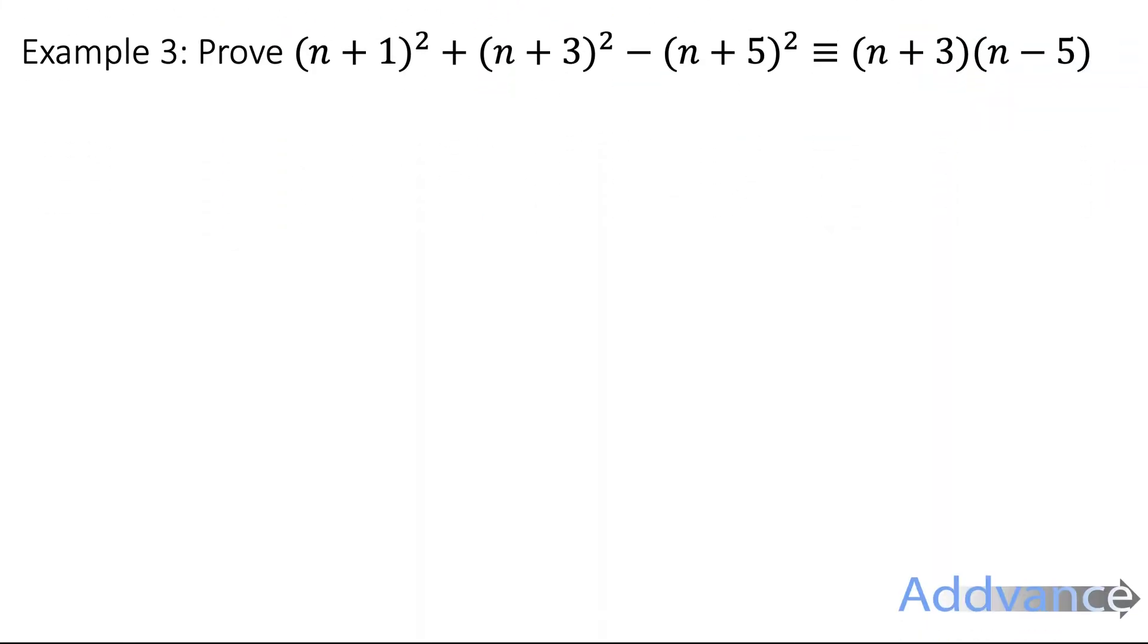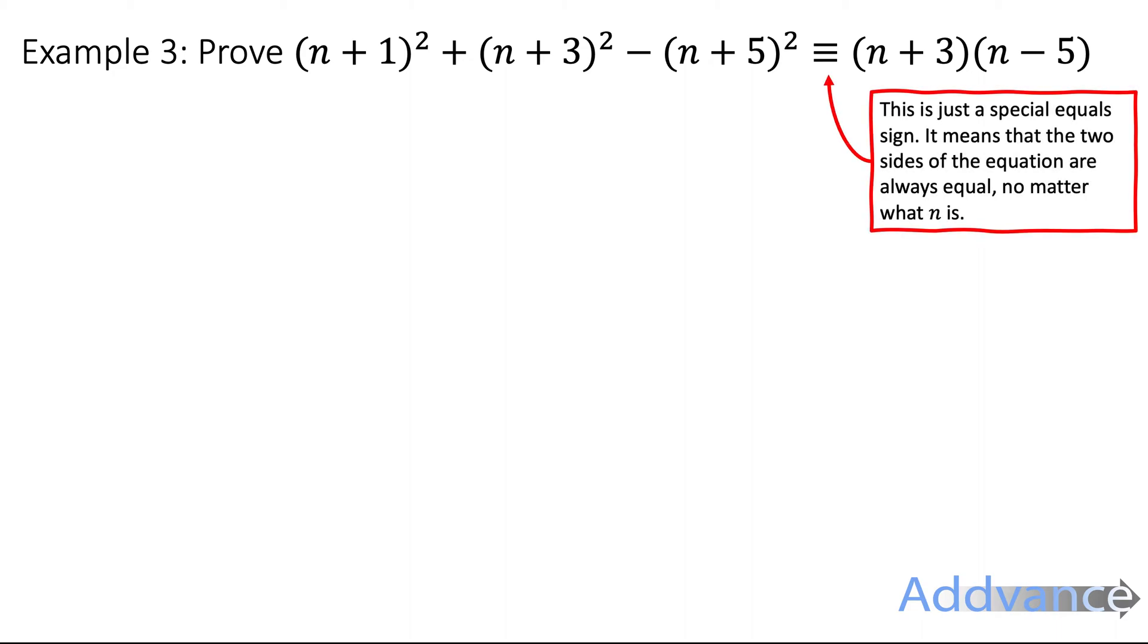Example 3. Prove that n plus 1 squared plus n plus 3 squared minus n plus 5 squared is the same as n plus 3 times n minus 5. This fancy sign here, which is the identically equal to sign, just means both sides are exactly the same as each other, no matter what n is.